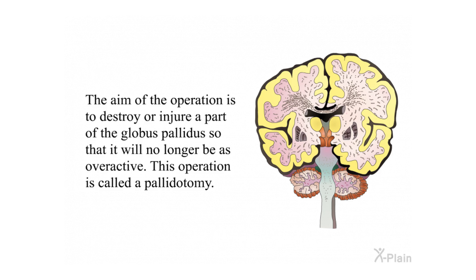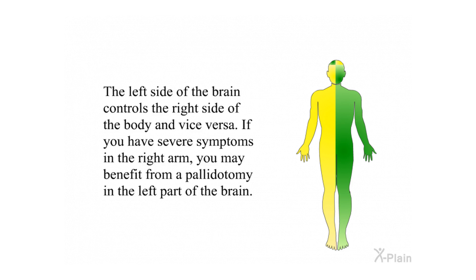The aim of the operation is to destroy or injure a part of the globus pallidus so that it will no longer be as overactive. This operation is called a pallidotomy. The left side of the brain controls the right side of the body and vice versa. If you have severe symptoms in the right arm, you may benefit from a pallidotomy in the left part of the brain.